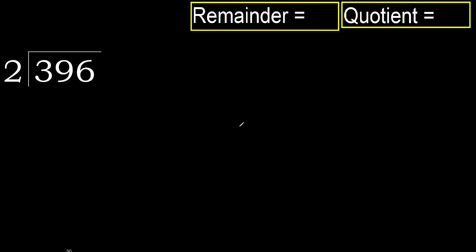396 divided by 2. 3 is not less; therefore, with 3, 2 multiplied by which number is nearest to 3 but not greater.